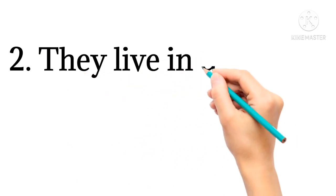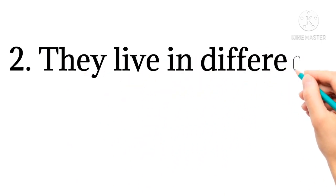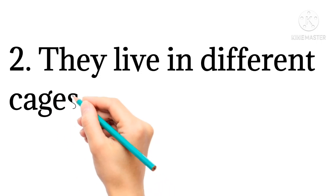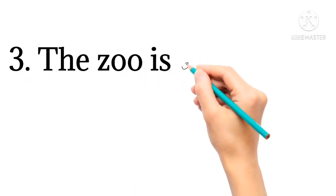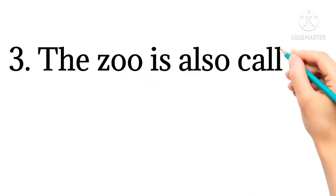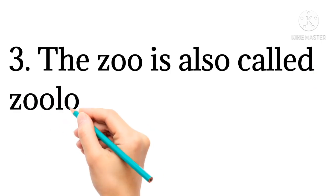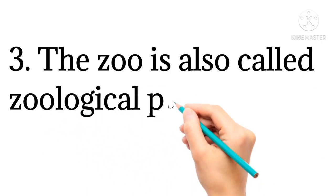Second, they live in different cages in the zoo. Third, a zoo is also called zoological park.